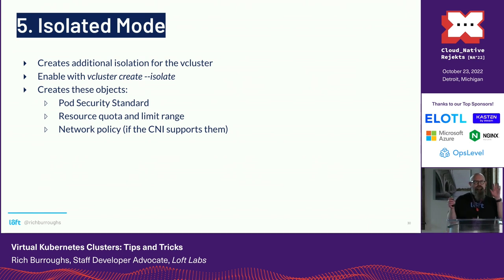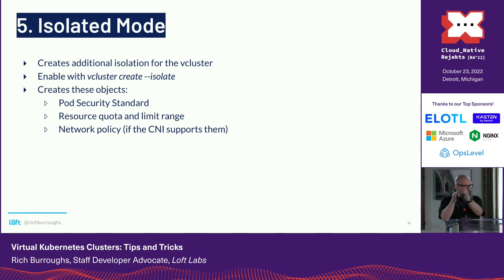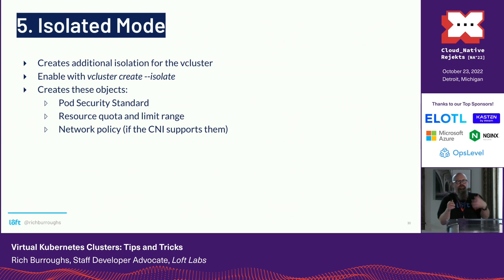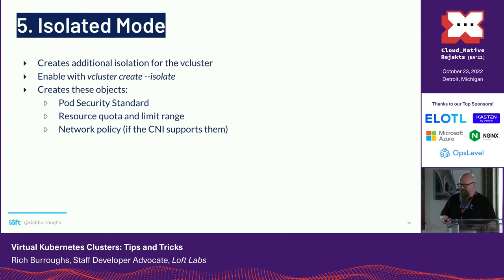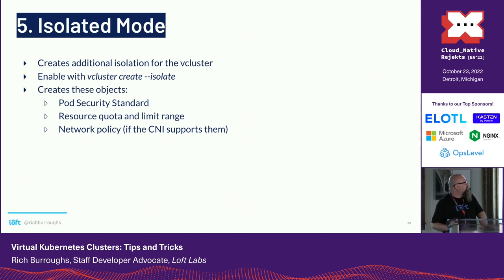Number five: isolated mode. vCluster sits somewhere on the continuum between namespace-based and cluster-based isolation. People were coming to us wanting more isolation for various use cases. So we created isolated mode — you just give it a double-dash isolate flag, and it creates a pod security standard, a resource quota, a limit range, and a network policy if your CNI supports that. You can override the values of these things, like quota numbers, in the values YAML file.